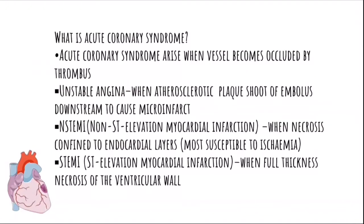Before that, we have to know what is acute coronary syndrome. Acute coronary syndrome arises when a vessel becomes occluded by a thrombus — a blood clot. There are three grades: first is unstable angina, second is non-ST elevation myocardial infarction, and the third is ST elevation myocardial infarction, where ST represents the ST segment seen in ECG.